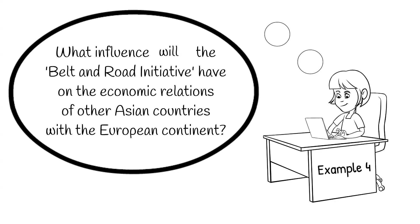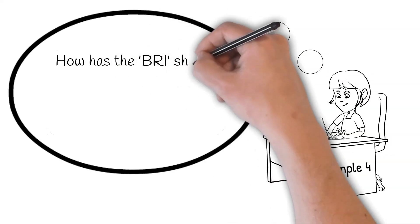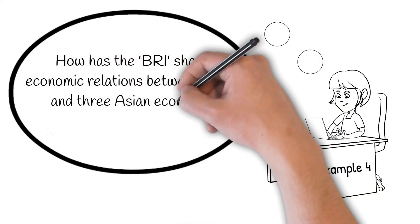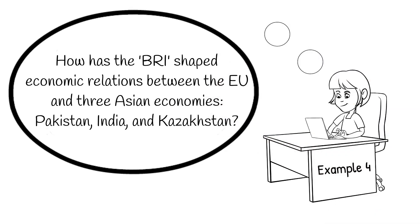How do we fix this question? How about: 'How has the BRI shaped economic relations between the EU and three Asian economies — Pakistan, India, and Kazakhstan?' Now we know what the European continent refers to in practice and we can study EU policy and economic developments. We also have a clear idea of the Asian trade partners relevant to our study. We'd still have to demonstrate that this is an informed choice — for instance, Pakistan is a major supporter of the BRI, India is a major critic, and Kazakhstan is a mid-sized partner that relies heavily on both Chinese and European economic relations — but a solid literature review could establish that.